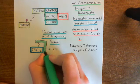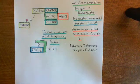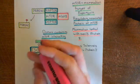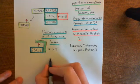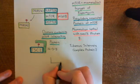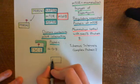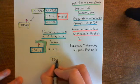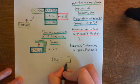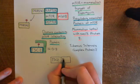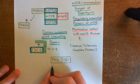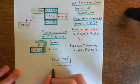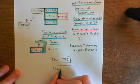Usually, the tuberous sclerosis complex 2 wants to bind with another protein known as the tuberous sclerosis complex 1. Normally, TSC2 would bind to the tuberous sclerosis complex protein 1, TSC1, and they would make what is naturally called the tuberous sclerosis complex.